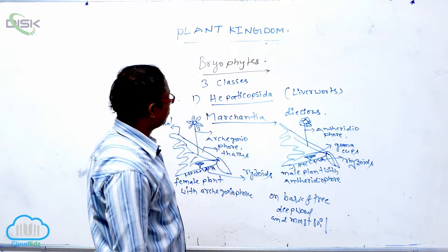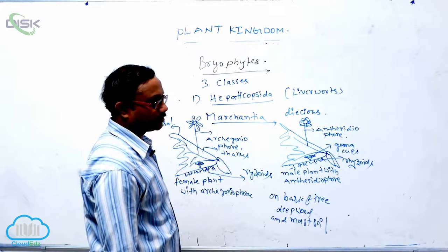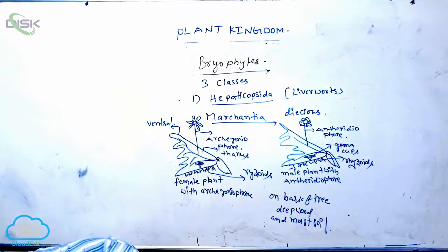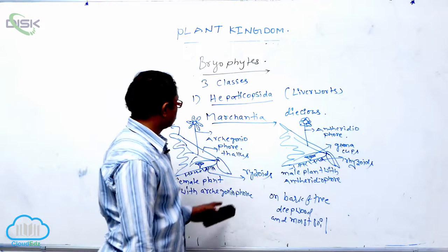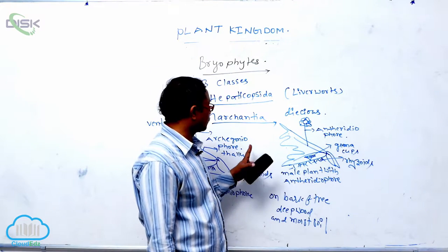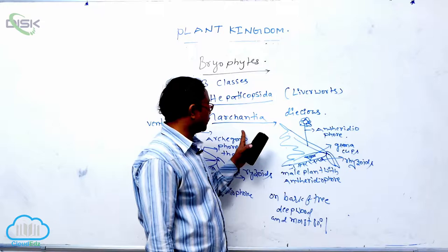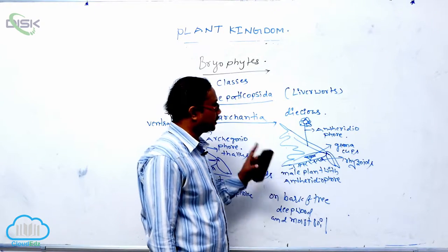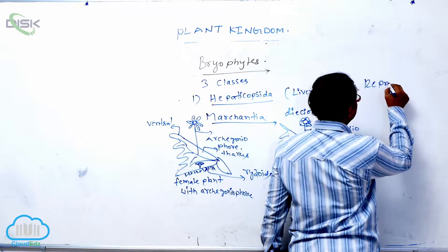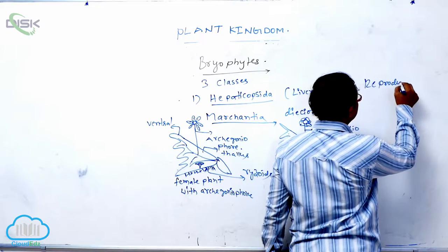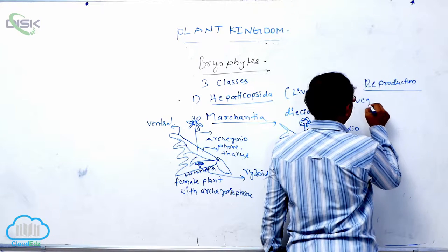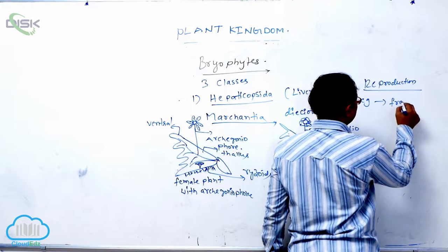Marchantia is a dioecious plant, meaning male plant and female plant are separate. In the reproduction process, vegetative reproduction takes place by fragmentation.